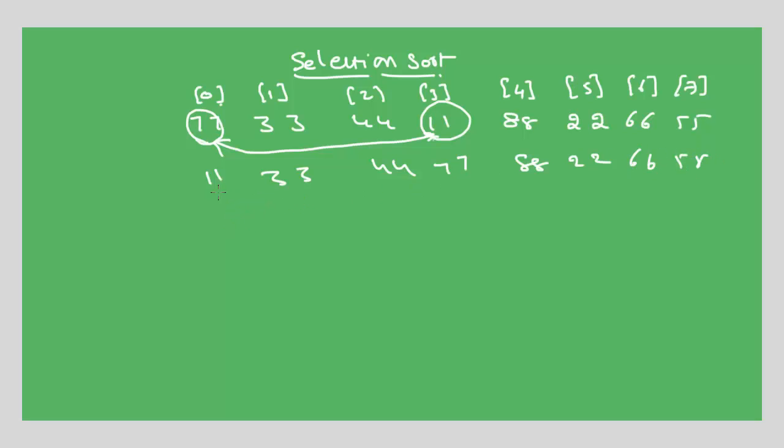Now the first value is sorted. Go to the second value, that is a[1] position. Now find the least value: 44, 77, 88, 22. So 22 is the least value. So replace this 22 with the first position.